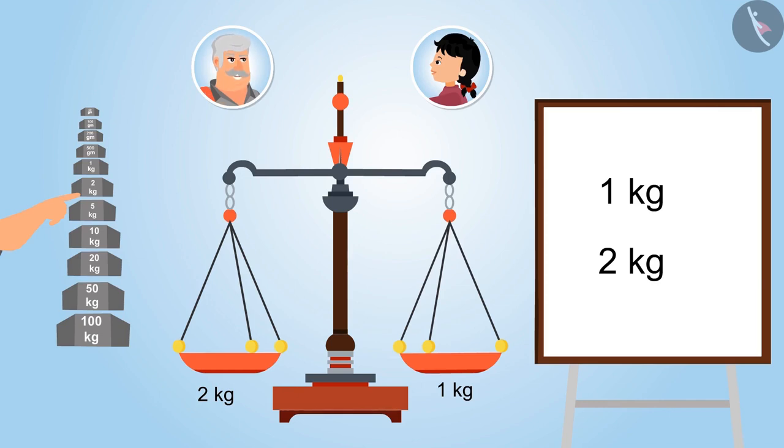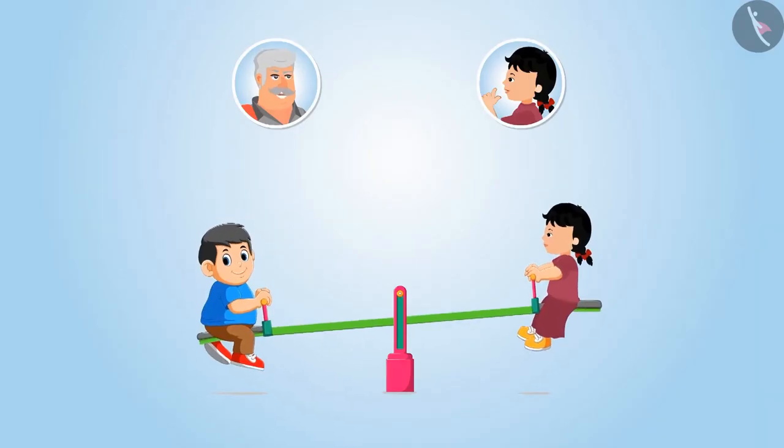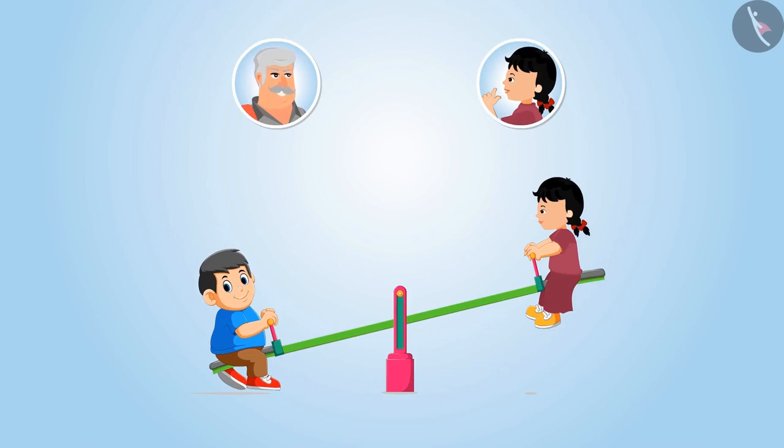Okay, I will teach you. Remember, when you swing in the seesaw with Shyam, he automatically moves downwards and you move upwards, right? Yes, uncle, because Shyam is heavier than me. That's why he moves downwards.